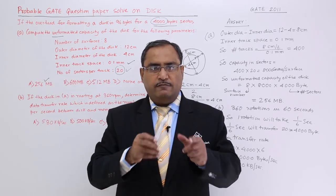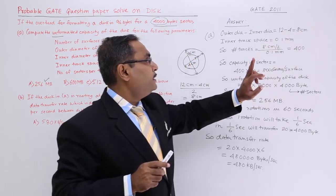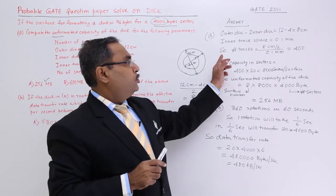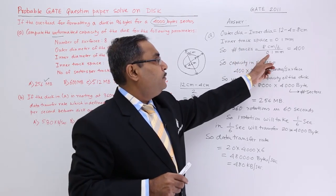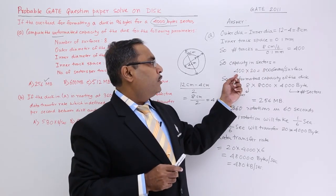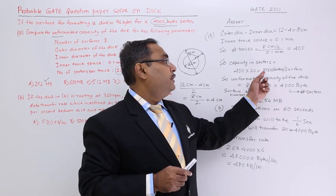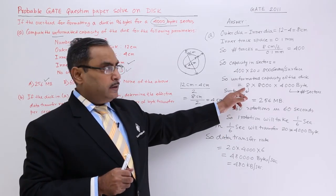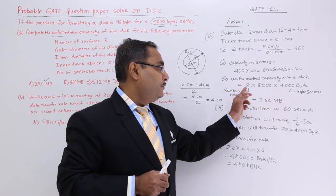Let me revise the solution. Outer diameter minus inner diameter: 12 − 4 = 8 cm. Inner track space = 0.1 mm. Number of tracks = (8 cm / 2) / 0.1 mm = 400 tracks per surface. Capacity = 400 tracks × 20 sectors per track = 8000 sectors per surface. Total unformatted capacity = 8 surfaces × 8000 sectors × 4000 bytes per sector.